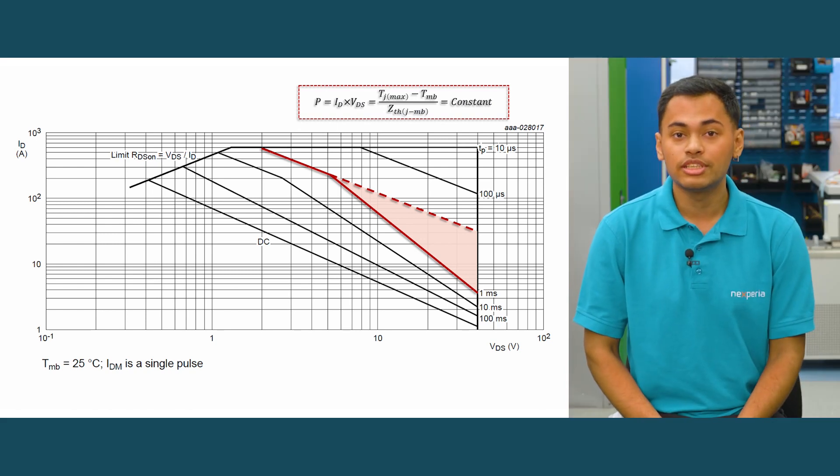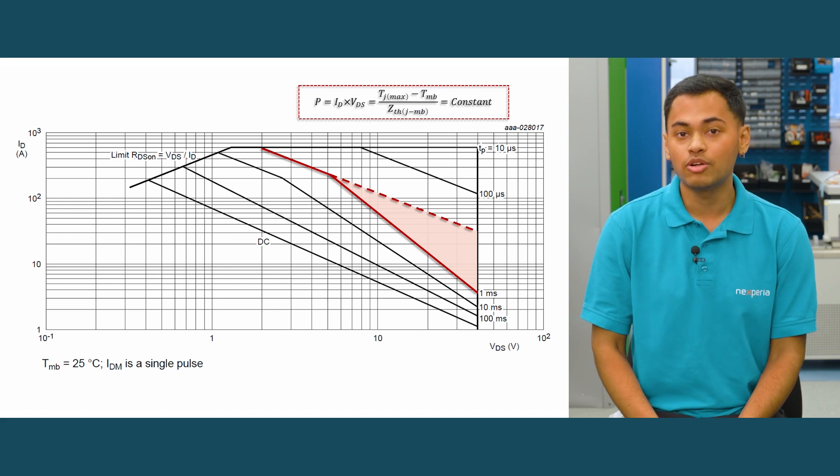This is what basically causes the bends in the graph and this can lead to a power loss of more than half.